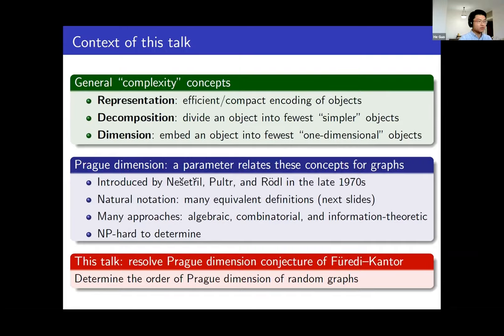It has been proved that determining the proc dimension of a general graph is NP-hard. Therefore, studying proc dimension is an interesting but hard problem. In this talk, we introduce our result: we resolve the proc dimension conjecture by Fruity and Kanter, determining the order of magnitude of the proc dimension of random graphs with high probability.